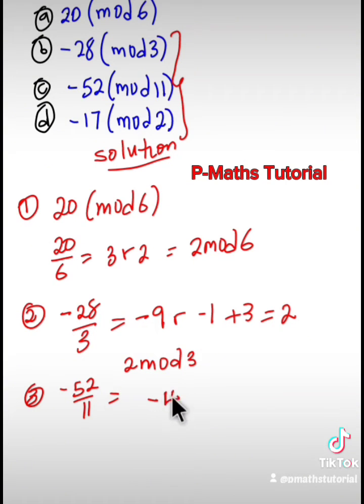remainder, negative 8. Use 11 which is your divisor and add to negative 8. Minus 8 plus 11 should give us a positive 3. Therefore the modulo is 3 mode 11.